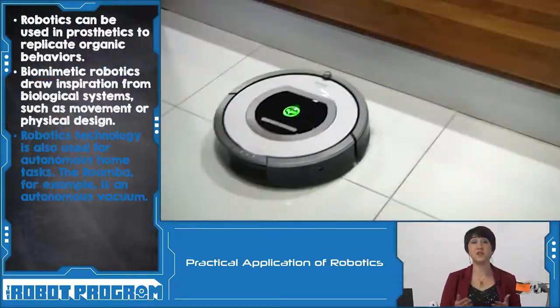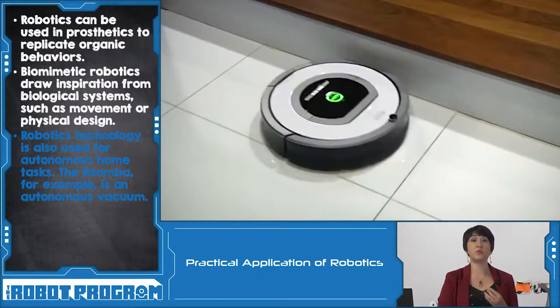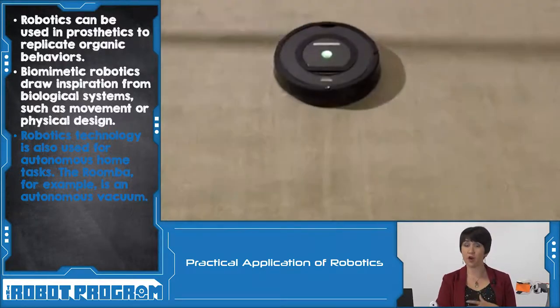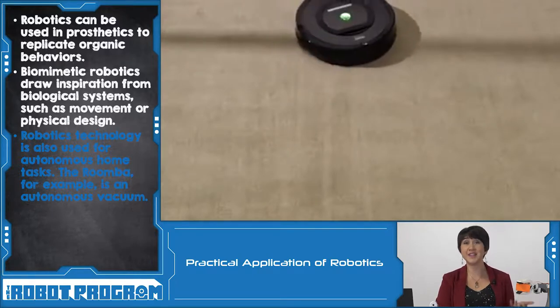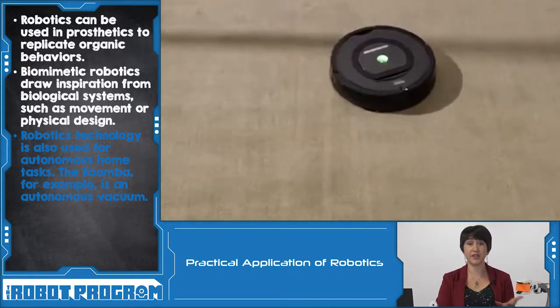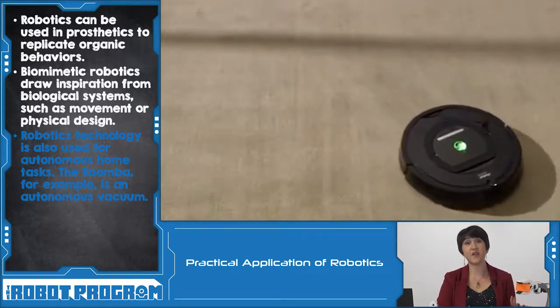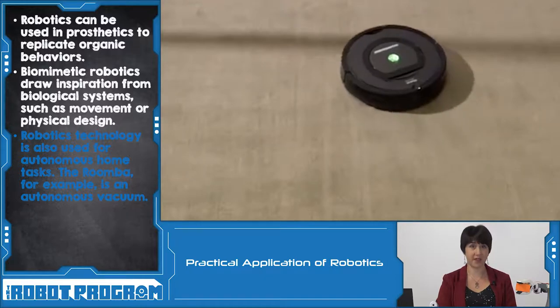Robots can even be found in homes now. Look at something like the Roomba vacuum — it's an autonomous vehicle that can go around and clean your carpet or floor for you. It's an example of how a robot is being used in modern day life.